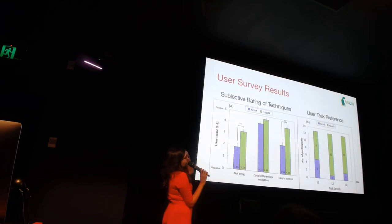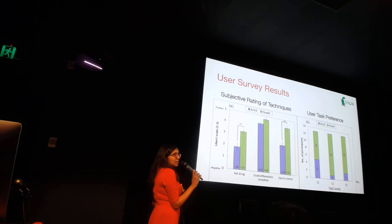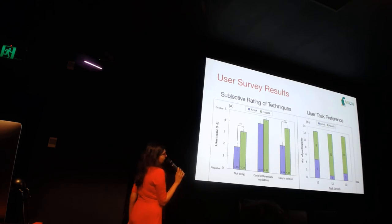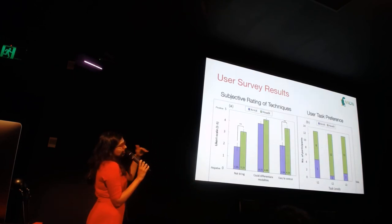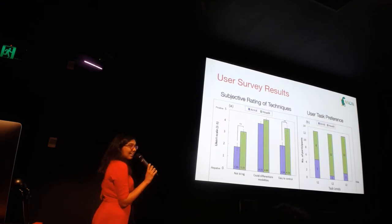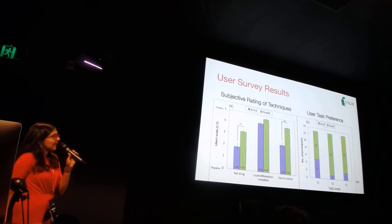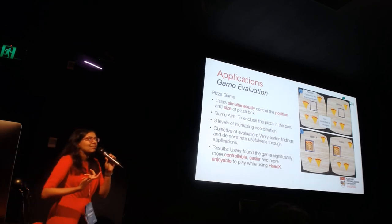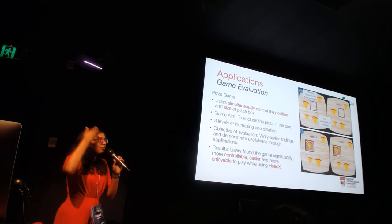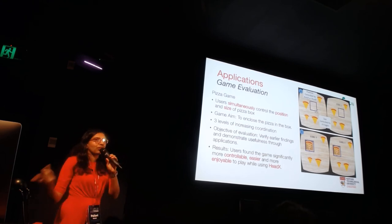In the user task preference results, HeadX was still preferred even in L1, though many people preferred the simplicity of ArmX and some were not used to moving their head to move a target. But as the levels increased, people really started preferring HeadX. It was interesting that those disparate parts of the body allowed people to focus better on tasks by using different parts of the body for each task, and this was validated by both quantitative and subjective results.